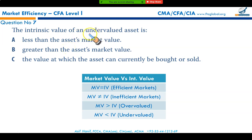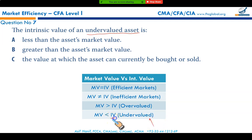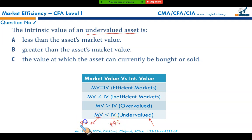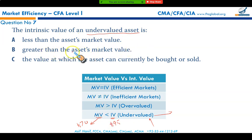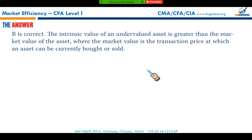The intrinsic value of an undervalued asset is greater than the market value. For example, if an asset should have a price of $95 but is currently trading at $70, it is undervalued. The intrinsic value is greater than the asset's market value, making option B the correct answer.